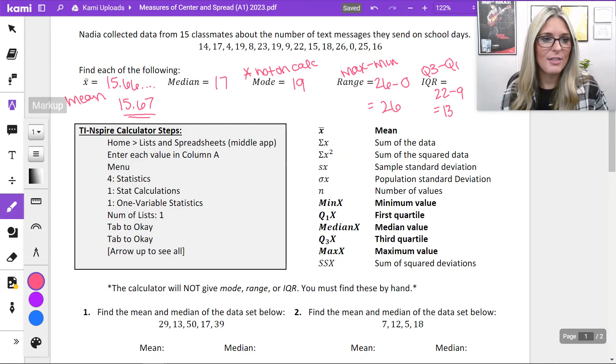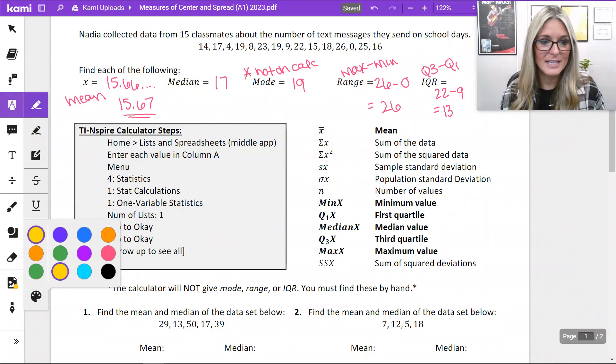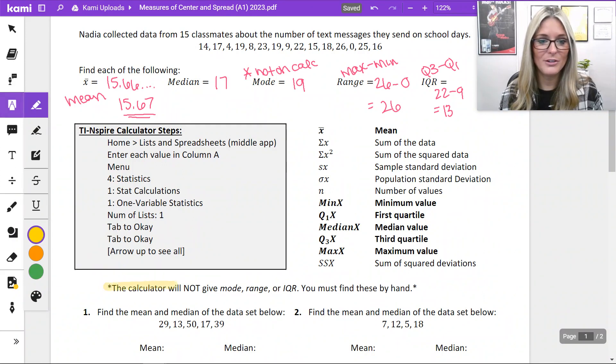So I've got the note there at the bottom again to emphasize the calculator will not give you mode, range, or IQR. You find them by hand. Now mode completely by hand. For range, they gave us minimum and maximum. IQR, they gave us the Q1 and Q3 to subtract.